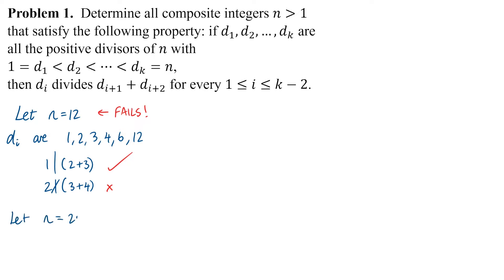If we try n equals 25, that's 5 squared, so the only divisors are 1, 5 and 25 itself. This does pass the test because 1 does divide 5 plus 25, and there's no other divisors to check.